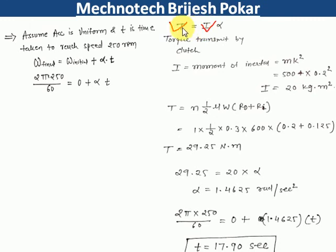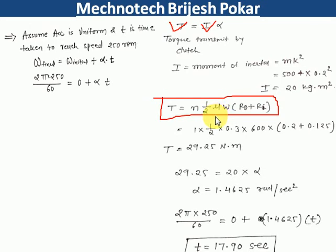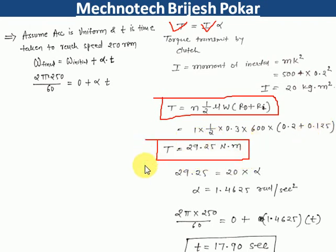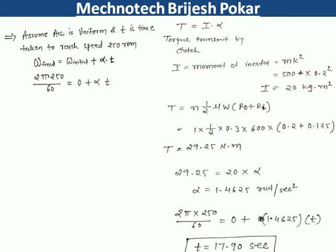Now we find torque T using the uniform wear theory equation: T = n × (1/2) × μ × W × (r_o + r_i). With n=1, μ=0.3, W=600 N, r_o=0.2 m, and r_i=0.125 m, we calculate T. Then using T = I·α, we find α, and substituting into ω = α·t, the time required is t = 17.90 seconds — the total time to accelerate from 0 to 250 rpm.